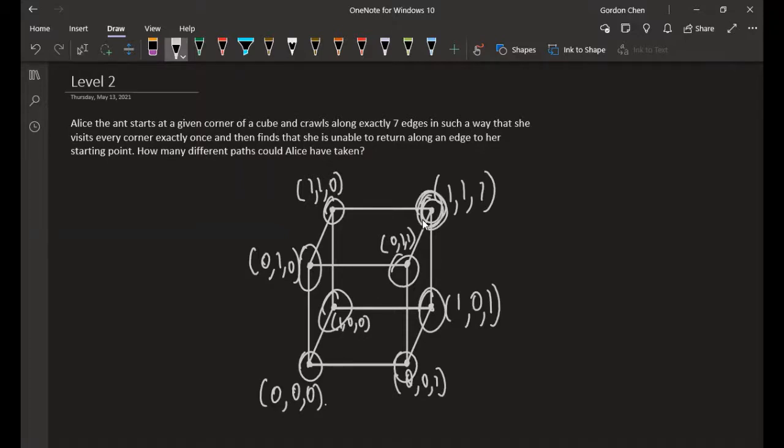Basically what we have is the first time Alice moves, she has three choices. The next time she moves, she can only have two choices because of the restrictions.